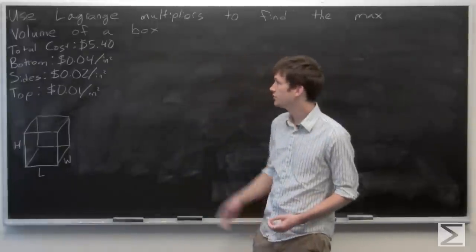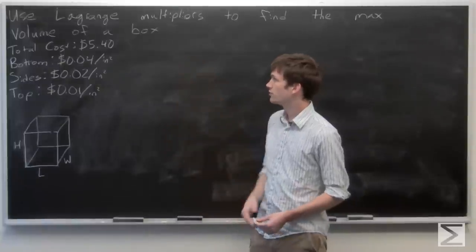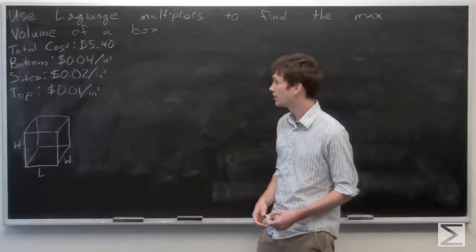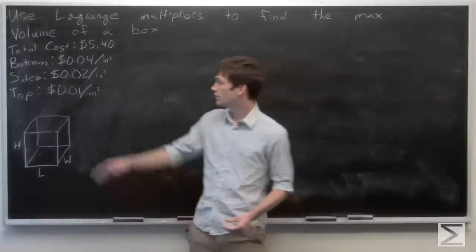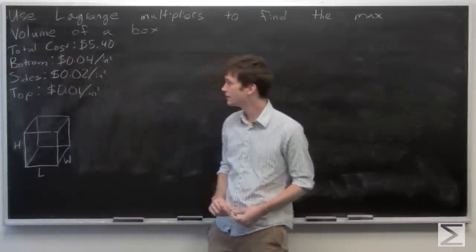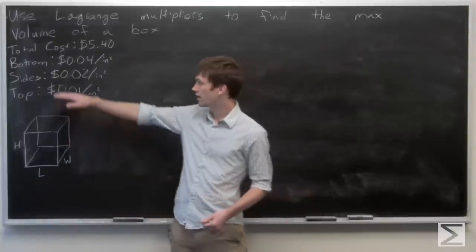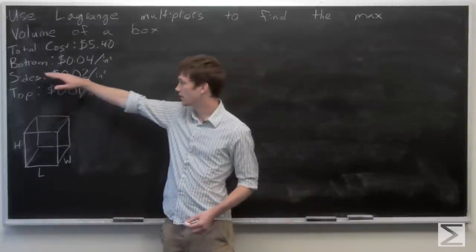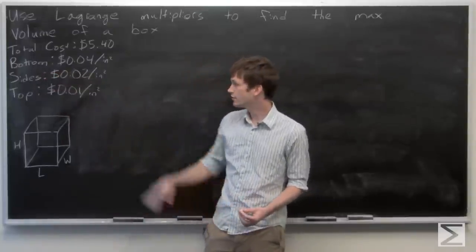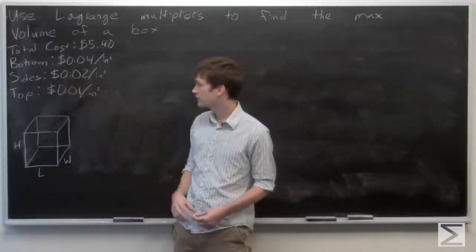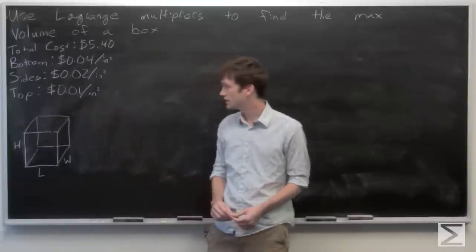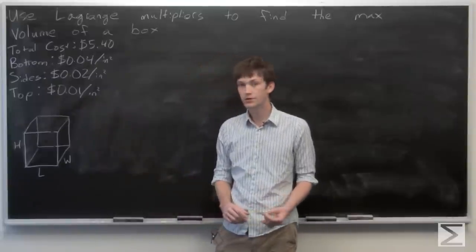In this problem we're asked to use Lagrange multipliers to find the volume of a box whose total cost is $5.40, where the bottom costs $0.04 per square inch, the sides cost $0.02 per square inch, and the top costs $0.01 per square inch.